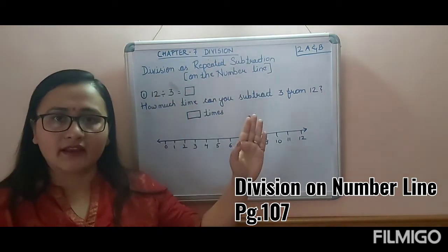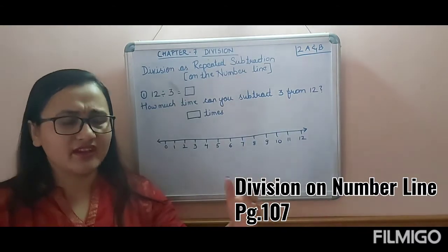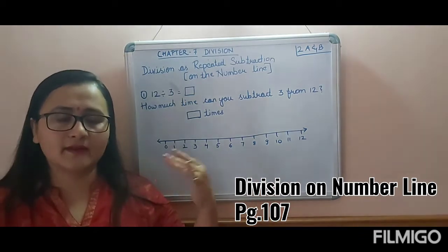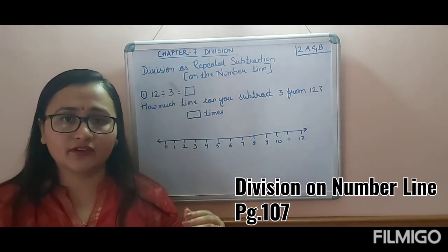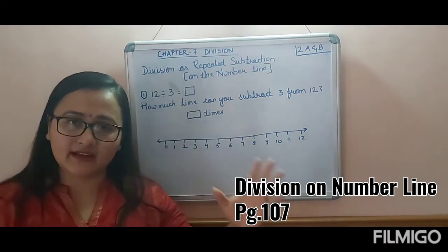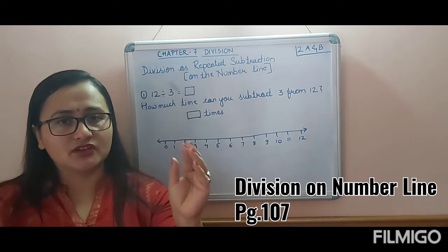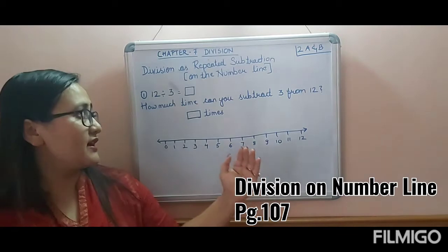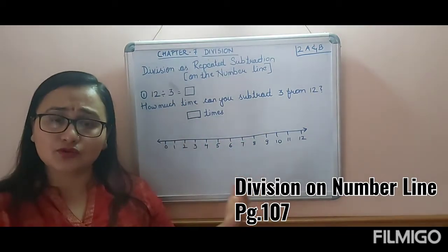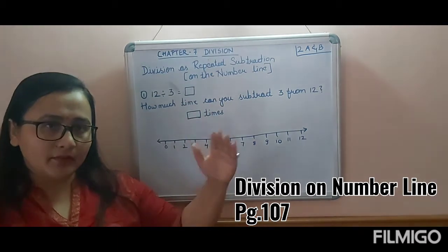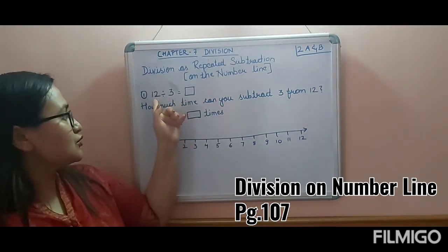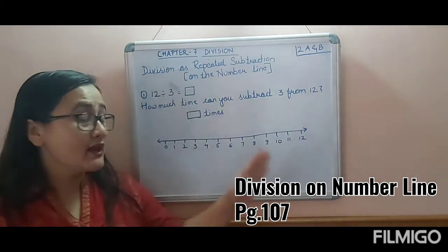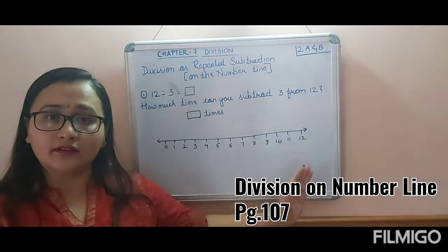Today we will do division as repeated subtraction on a number line. This is another method of dividing. There are various methods of division, but we will move slowly, step by step, so it is not difficult. Today we are learning that division can also be done through repeated subtraction — if we keep subtracting 3 from 12 every time, we will get the answer that way.